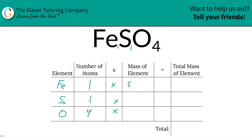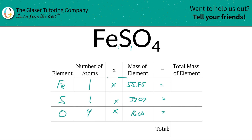Let's write them in. So 55.85 for iron, sulfur is going to be 32.07, and oxygen is 16. Then all we simply have to do is multiply across the row to find the total mass of each element in the compound.